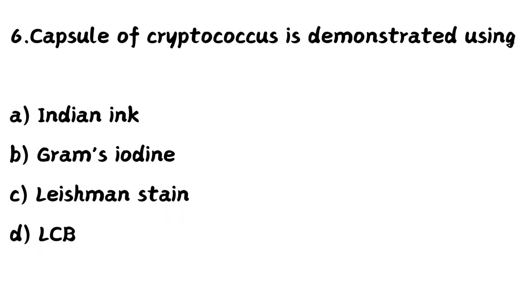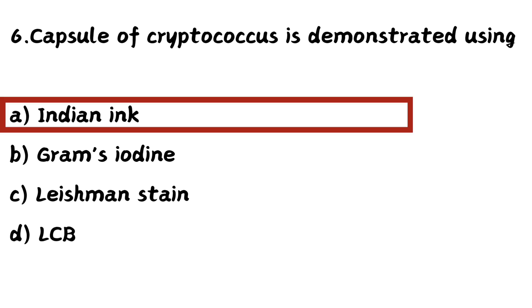Question number six: Capsule of Cryptococcus is demonstrated using — Option A: Indian ink, Option B: Gram's iodine, Option C: Leishman stain, Option D: LPCB (lactophenol cotton blue). The right answer is Option A — Indian ink is used for the demonstration of the capsule of Cryptococcus.